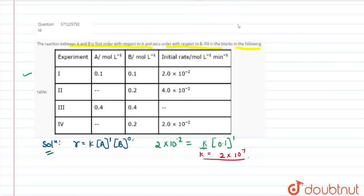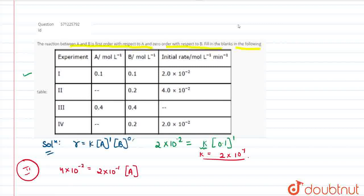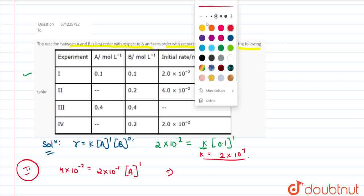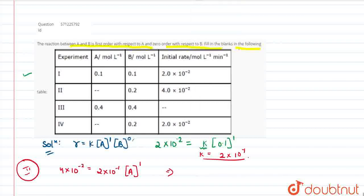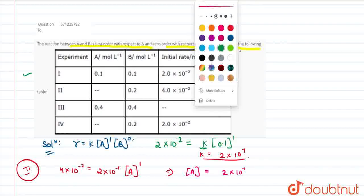Moving on to the second row, which we have to solve. We get 4×10⁻² equals K. Now we know the value of K is 2×10⁻¹, multiplied by the concentration of A to the power 1. We don't know its concentration, so deducing it: the concentration of A will be 2×10⁻¹. So our first blank has been filled.